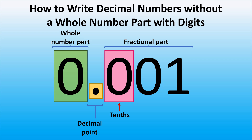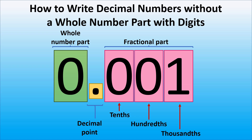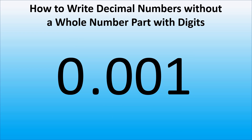This is a fractional part, and we have zero in the tenth place, zero in the hundredth place, and one in the thousandth place. As there is no whole number part, we only read the fractional part. Thus, we will read it as one thousandth.